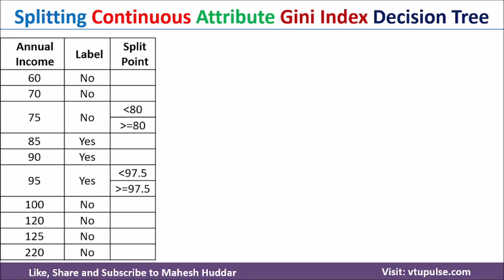If you scan the label column again, there is another change from 'yes' to 'no,' meaning there exists a split point between the data points 95 and 100. The average is 97.5, so the split point is less than 97.5 and greater than or equal to 97.5. For this dataset we have two split points, and we decide which is better based on the Gini index.